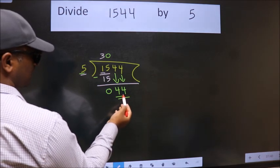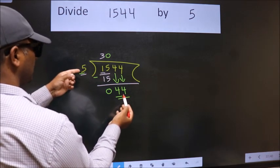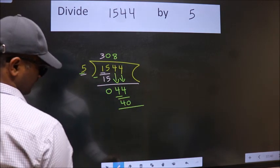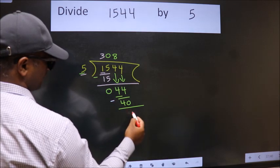A number close to 44 in the 5 table is 5 times 8 equals 40. Now, we subtract. We get 4.